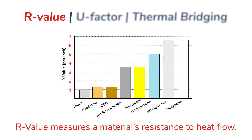R-value, or thermal resistance, measures how well a material resists conductive heat flow. This means the higher the R-value, the better the insulating properties of a material. Here you can see the average R-value per inch of commonly used building materials.